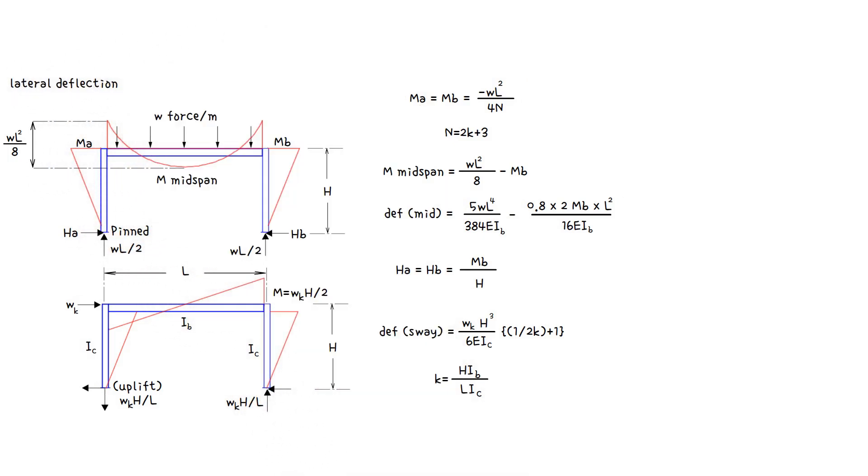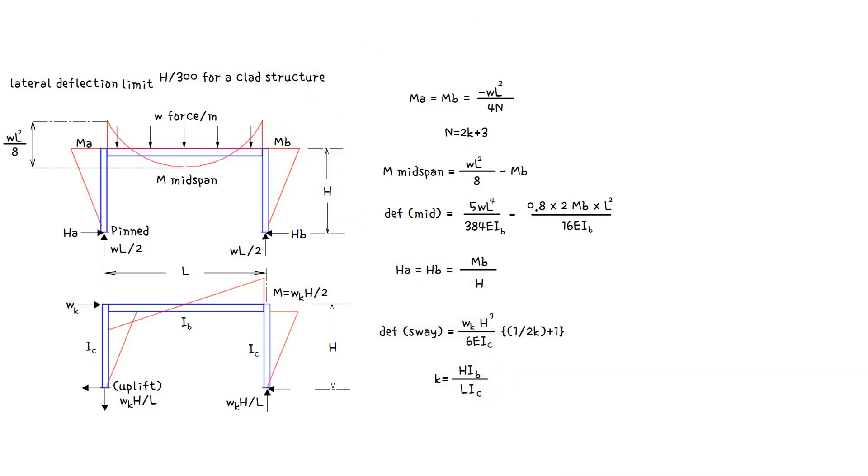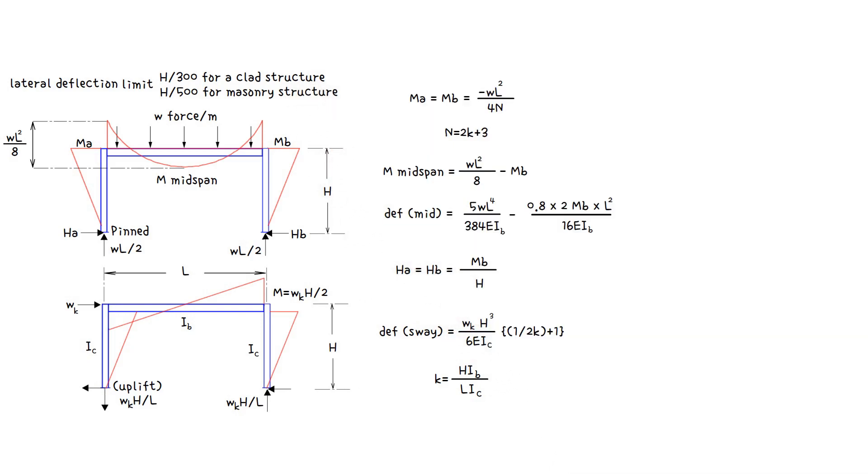For lateral deflection the frame should be limited to height over 300 for a clad structure, to height over 500 for a frame bracing masonry structure. In other words, for a story height of 2.5 meters, deflections should be limited approximately 5 to 10 millimeters.